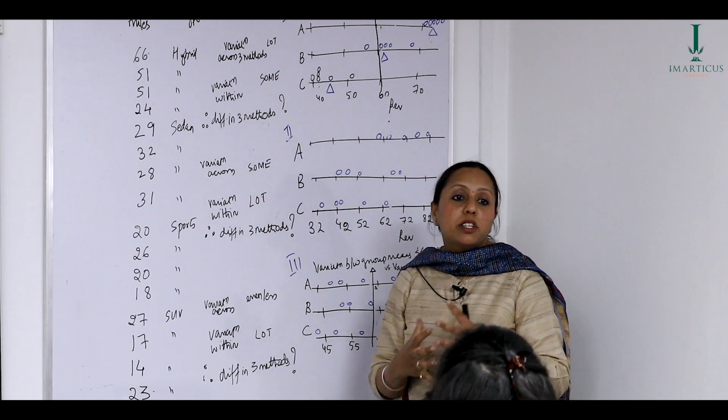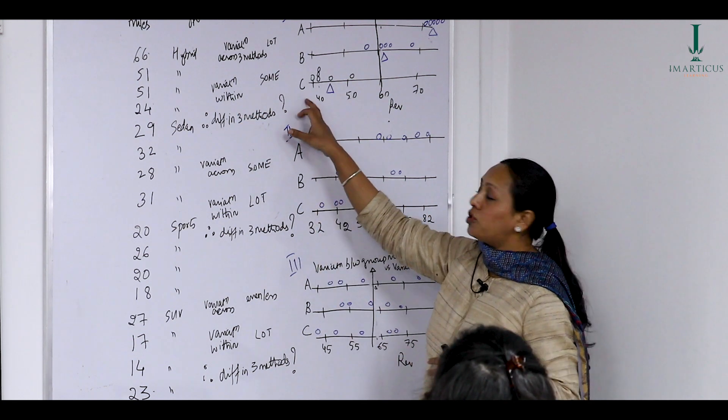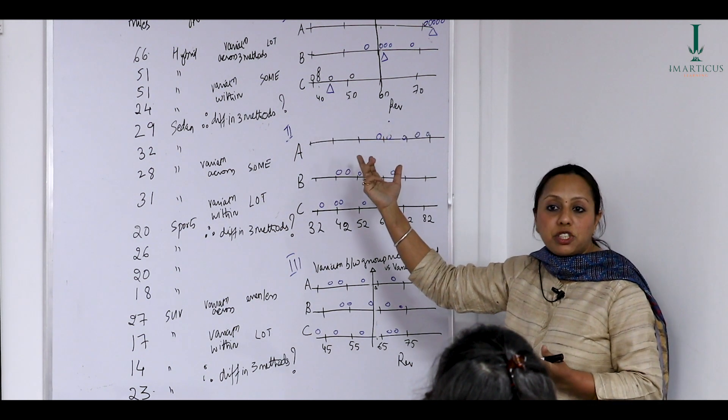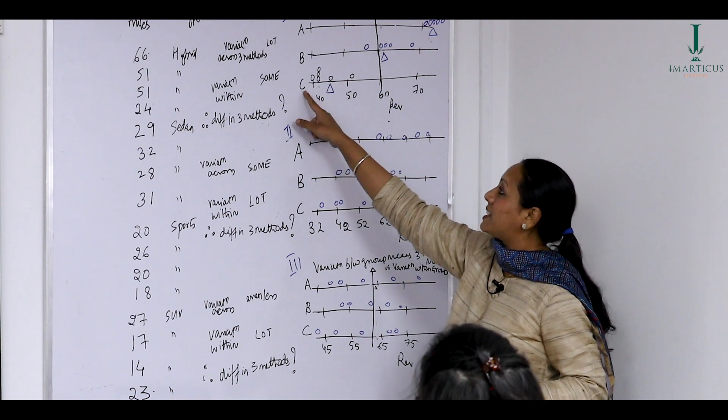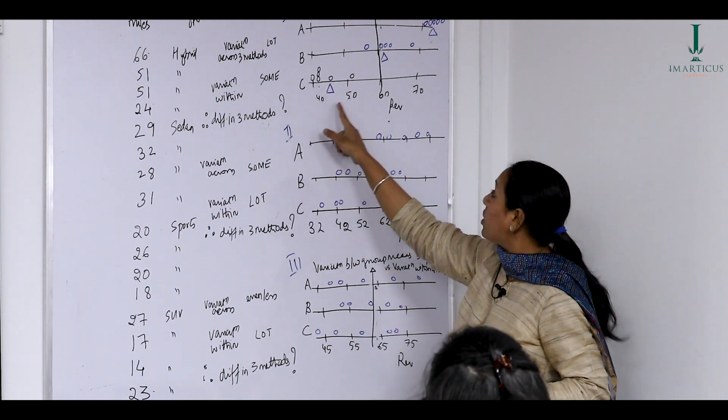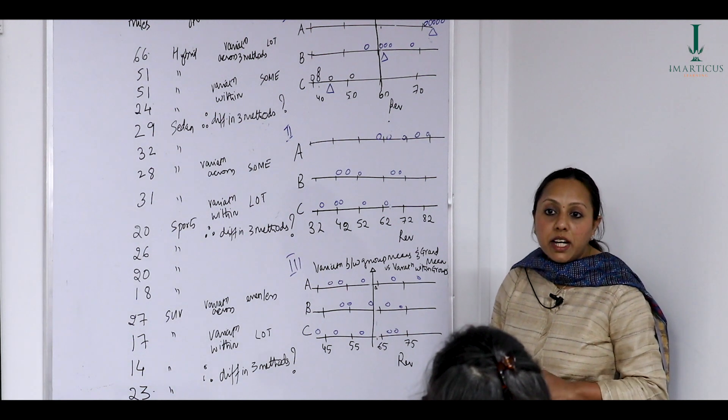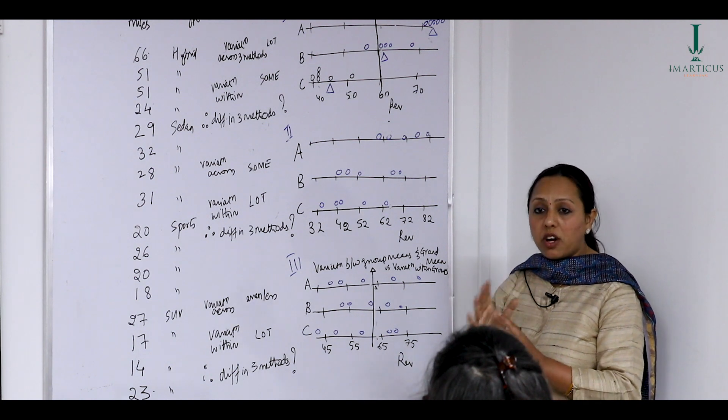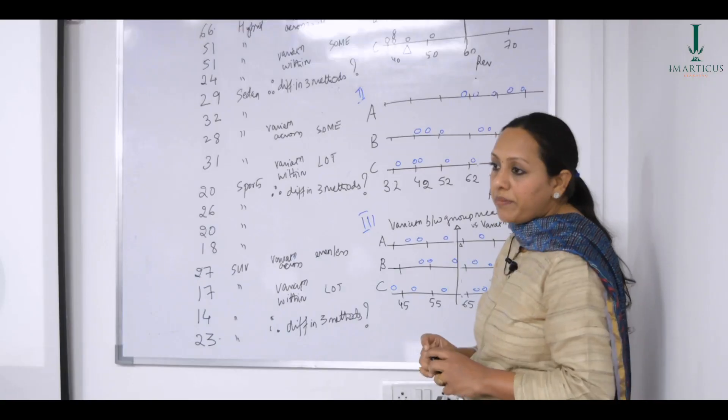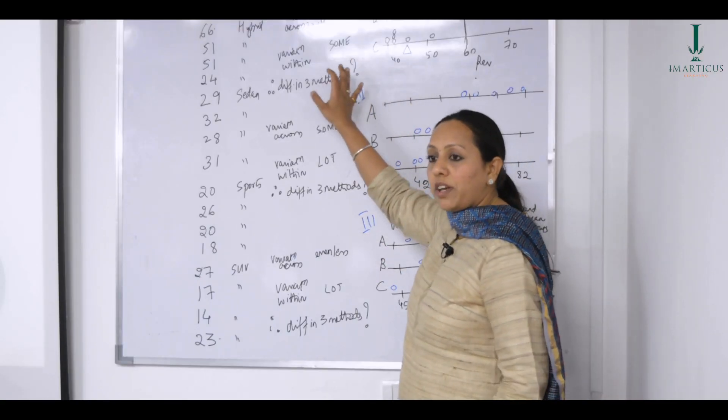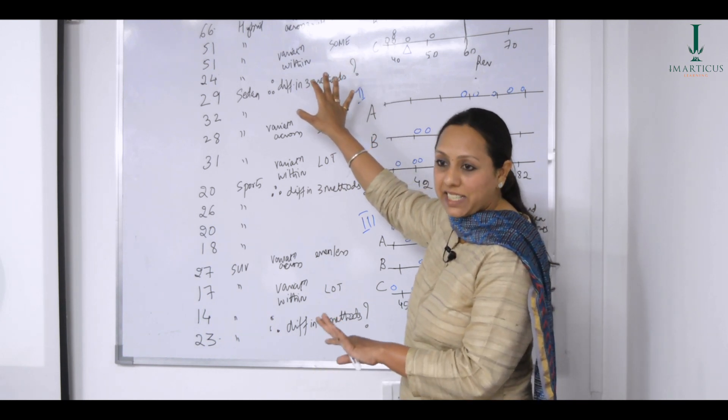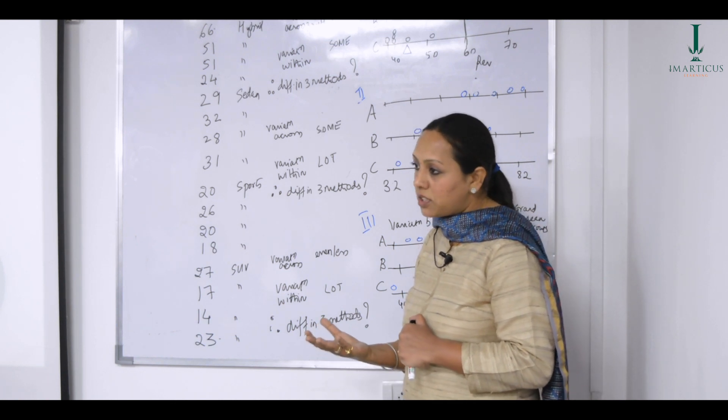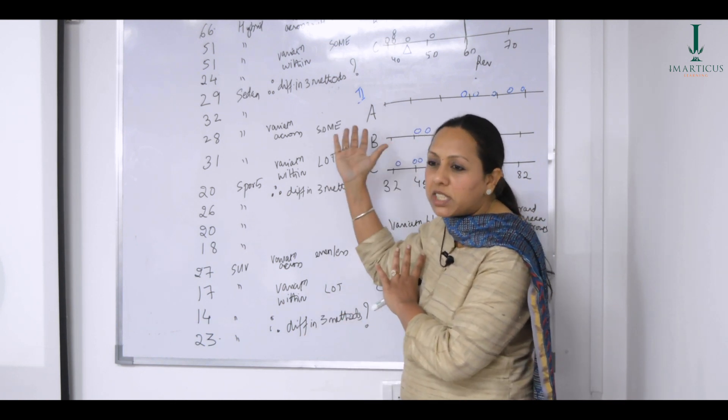What about variation within a method? So if you notice, I've used method C. I'm not getting the same revenue each time. Sometimes it is less than 40, sometimes it's more than 40, sometimes it is one point is at 50. So what do you notice about the variation within a method? Is it too much or is it pretty consistent? Pretty consistent. So if I've written some variation within method C, A, B, am I correct in writing some as my adjective? Yes, I cannot write lot there because I don't see that.